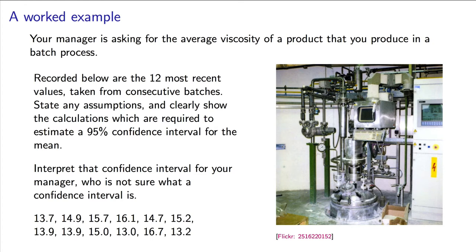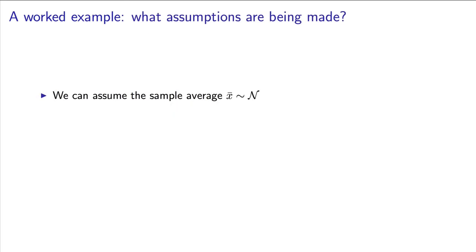We are given 12 viscosity values from consecutive batches and asked to find the confidence interval for the true process mean, the true viscosity. From the central limit theorem, we can assume that the sample average is normally distributed. We're not given the population standard deviation here, so we have to estimate it from the data.